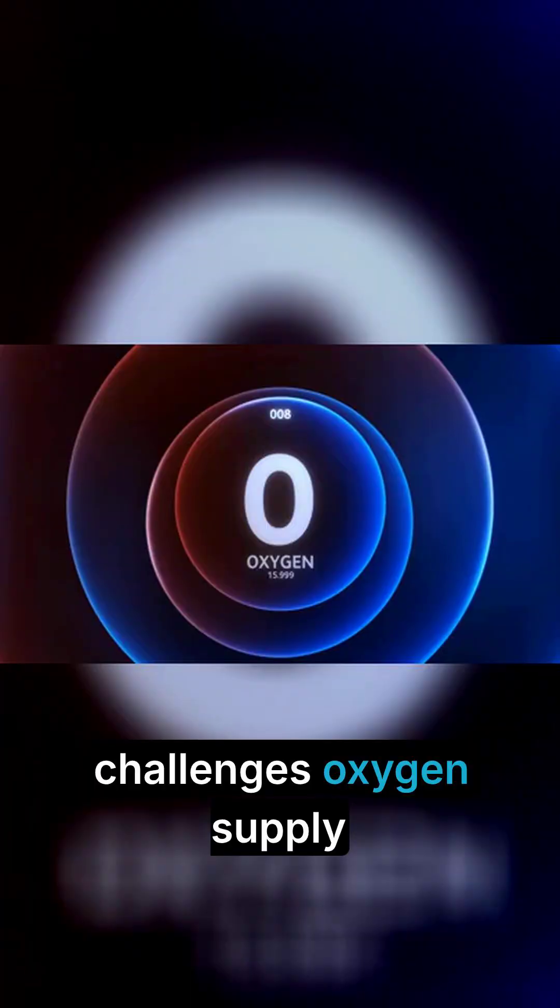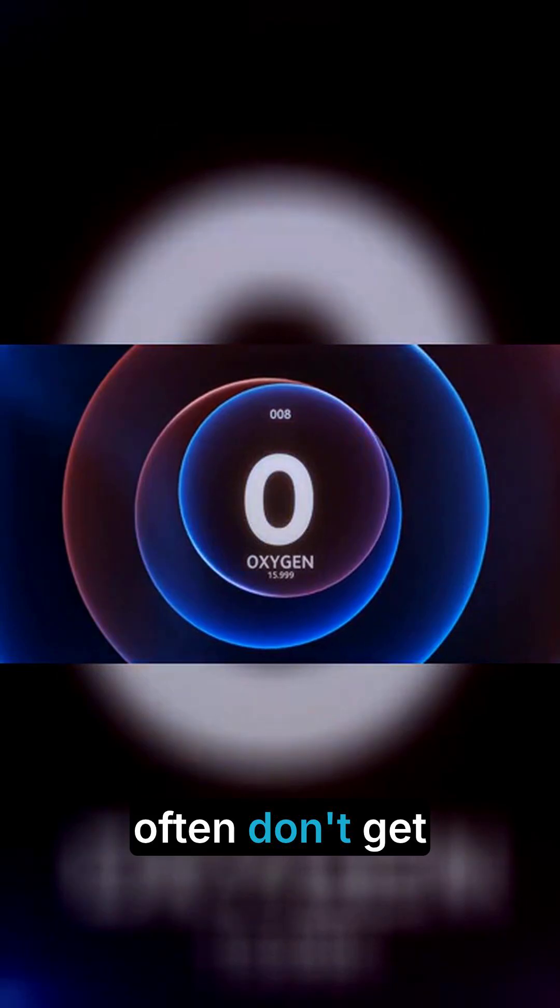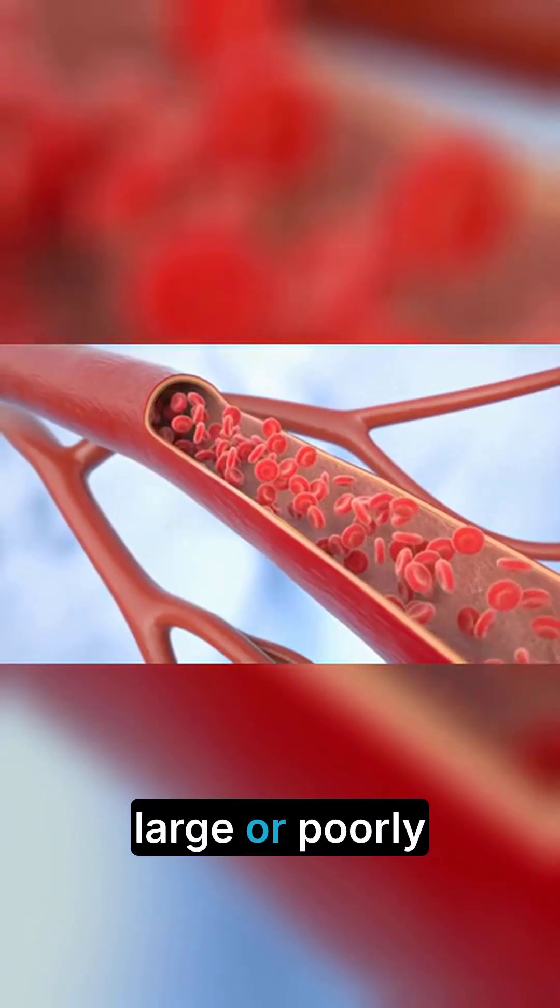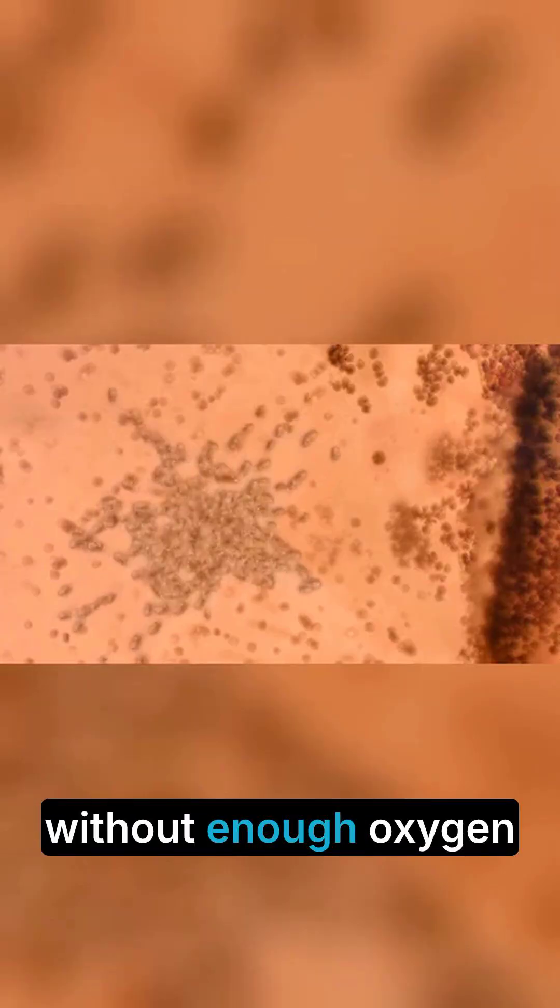But there are big challenges. Oxygen supply: implanted encapsulated cells often don't get enough oxygen, especially if the cell-dense device is large or poorly vascularized. Blood vessels don't grow into it fast enough. Without enough oxygen, the cells die or lose function.